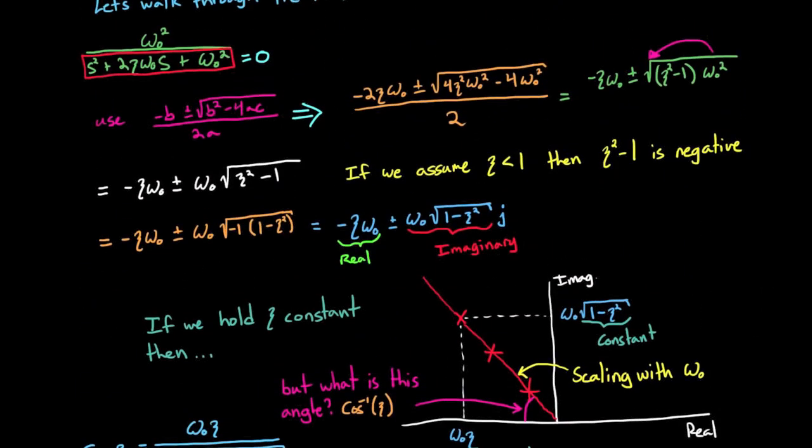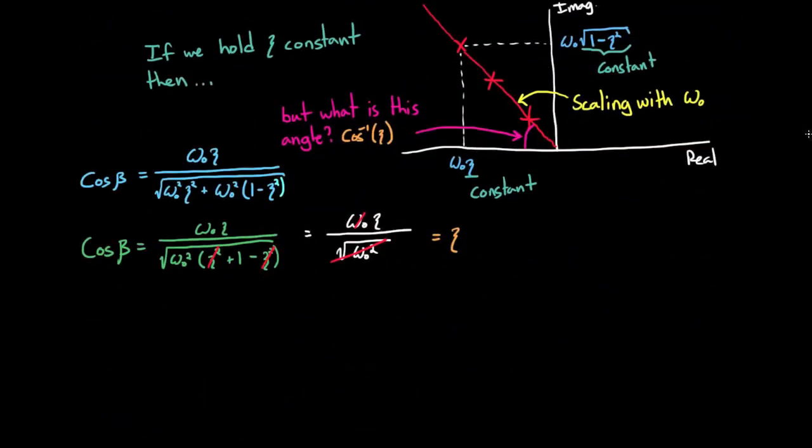But we made a fundamental assumption here when calculating this equation. Namely, we assumed that ζ was less than 1. We did that right here. So when we say that damping ratio is the inverse cosine of ζ, that only holds for ζ equals 0 to 1.